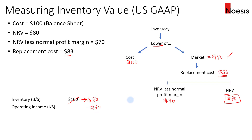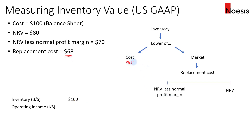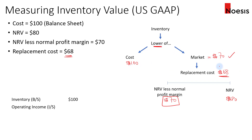In another scenario, if the replacement cost drops to $68 — below the lower limit of $70 — we set the market at the lower limit of $70. Comparing cost ($100) and market ($70), we write down the carrying amount from $100 to $70, recognizing a loss of $30 in the income statement. Again, reversal is prohibited.